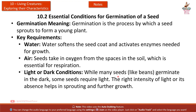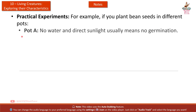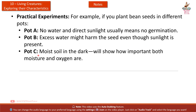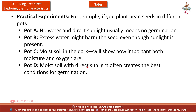Light or dark conditions: while many seeds like beans germinate in the dark, some seeds require light. The right intensity of light or its absence helps in sprouting and further growth. In practical experiments, Pot A with no water and direct sunlight usually shows no germination; Pot B with excess water may harm the seed; Pot C with moist soil in the dark shows the importance of moisture and oxygen; Pot D with moist soil and direct sunlight often creates the best conditions for germination.